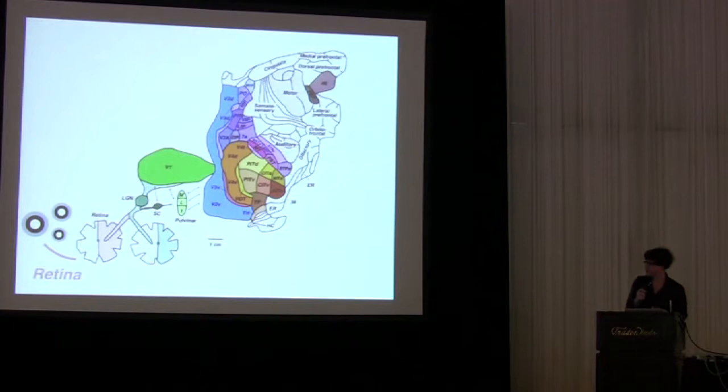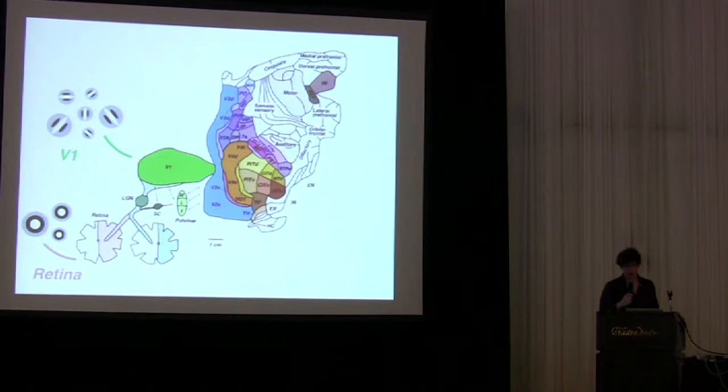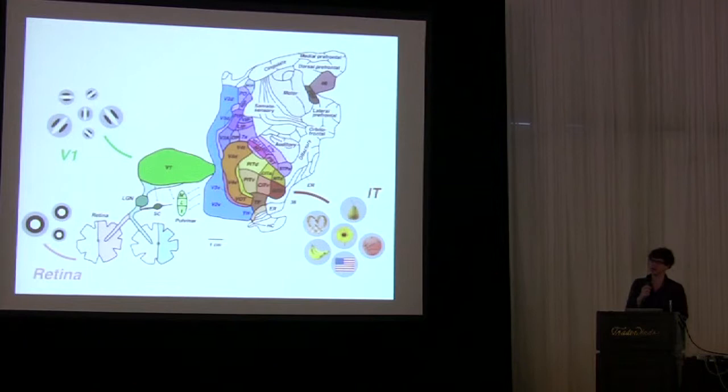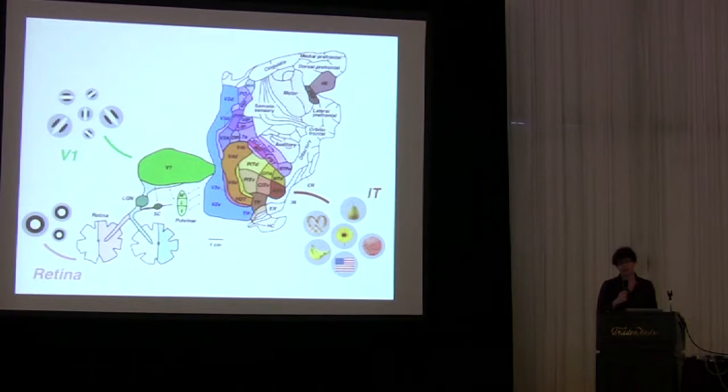In early areas like the retina or primary visual cortex V1, this has been relatively straightforward. Neurons seem to care about either local contrast or not just the presence of contrast but the shape in the case of orientation selectivity. There's also been a lot of really nice progress in later areas like inferotemporal cortex or IT, characterizing neurons as selective to particular everyday objects. I think the areas in between, in particular V2 and V4, have been quite a bit more difficult to figure out.